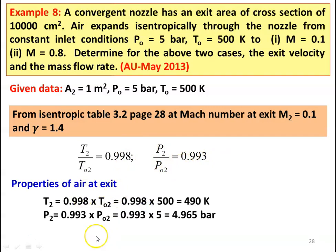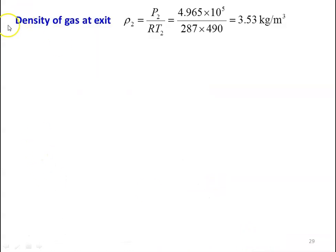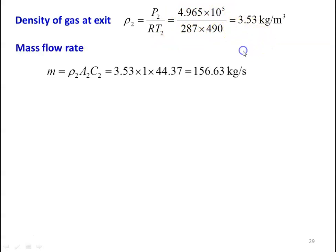Properties at the exit for M2 equal to 0.1: T2 equal to 0.998 into TO2 which is 0.998 into 500 equal to 499 Kelvin, P2 equal to 0.993 into PO2 equal to 0.993 into 5 equal to 4.965 bar. Velocity C2 equal to M2 into square root of gamma R T2, which is 0.1 into square root of 1.4 into 287 into 490 equal to 44.37 meters per second. Density rho2 equal to P2 by R T2 equal to 4.965 into 10 power 5 divided by 287 into 490 equal to 3.53 kilograms per cubic meter. Mass flow rate M equal to rho2 A2 C2 equal to 3.53 into 1 into 44.37 equal to 156.63 kilograms per second.